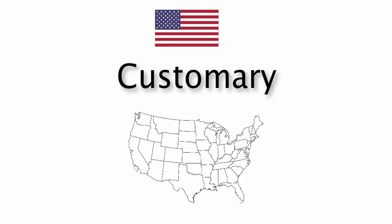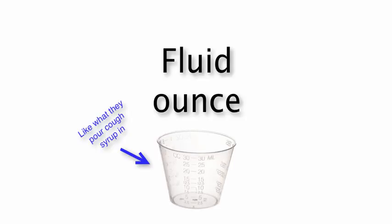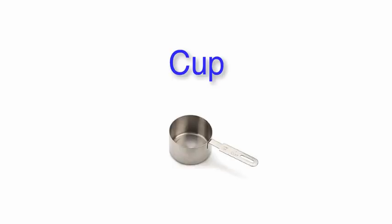We're going to talk about the customary units of measurement for capacity, not the metric system. So the smallest unit for capacity we're going to talk about is the fluid ounce. It's about as small as it gets. The next thing you're going to have from the fluid ounce will be a cup.